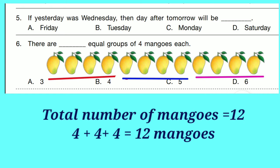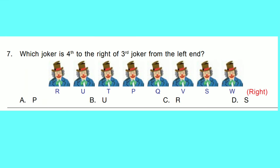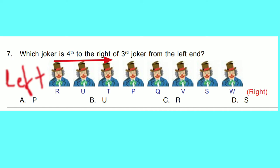Question number 7: Which joker is 4th to the right of 3rd joker from the left end? From the left end, 3rd joker is T. Now 4th joker from T is S. So correct option is D.